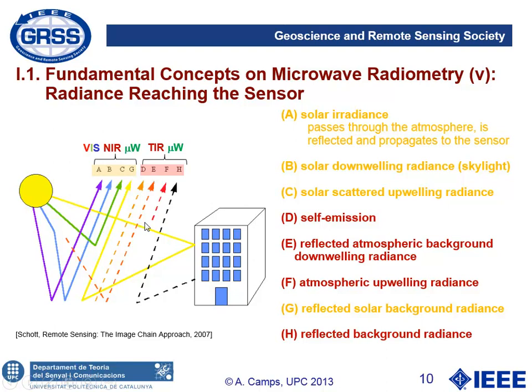In the thermal-infrared and microwave part of the spectrum, radiation is dominated by emission from bodies at a physical temperature around 300 Kelvin, the ambient temperature on Earth. We have radiation emitted by the surface under observation (term D), radiation from the atmosphere in the downwelling direction that scatters at the surface and goes up to the sensor (term E), upwelling radiation (term F), and radiation emitted by bodies that goes down, scatters, and finally reaches the sensor.